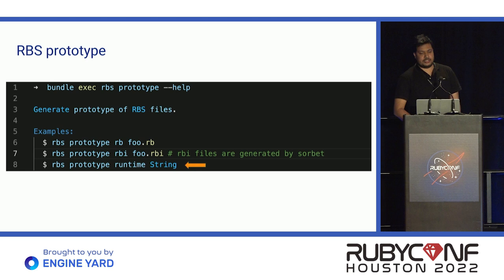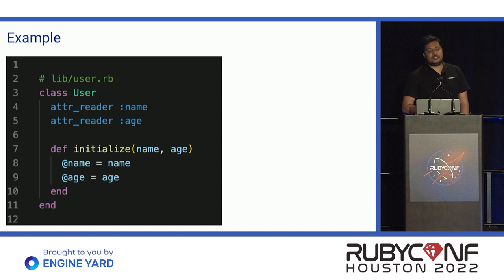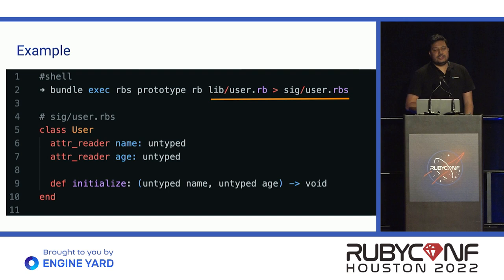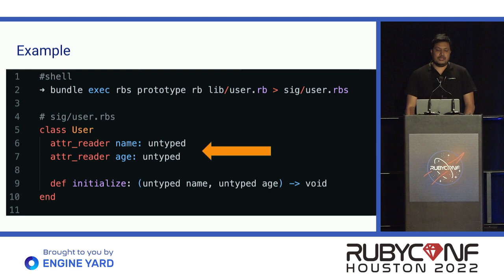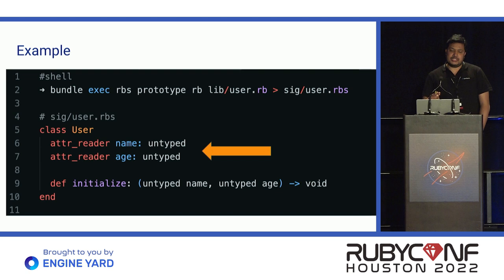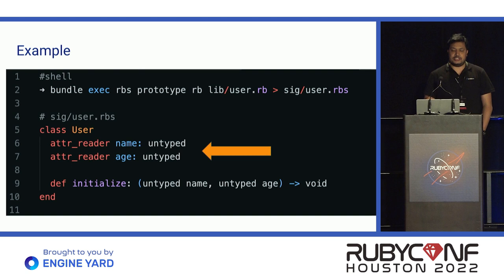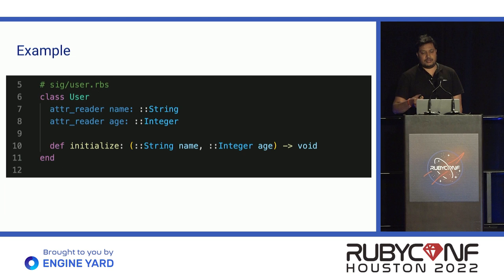Let's take a simple example. We have a class User with two attributes, name and age, and a constructor. We are going to generate the RBS file using the RB option. The output will show attribute reader name as untyped and age as untyped, and the function signature shows the function name, all arguments it accepts, and its return type. Untyped basically means it can accept any type of value, but the basic idea of static typing is not to have untyped values. We need to define specific types for our attributes.